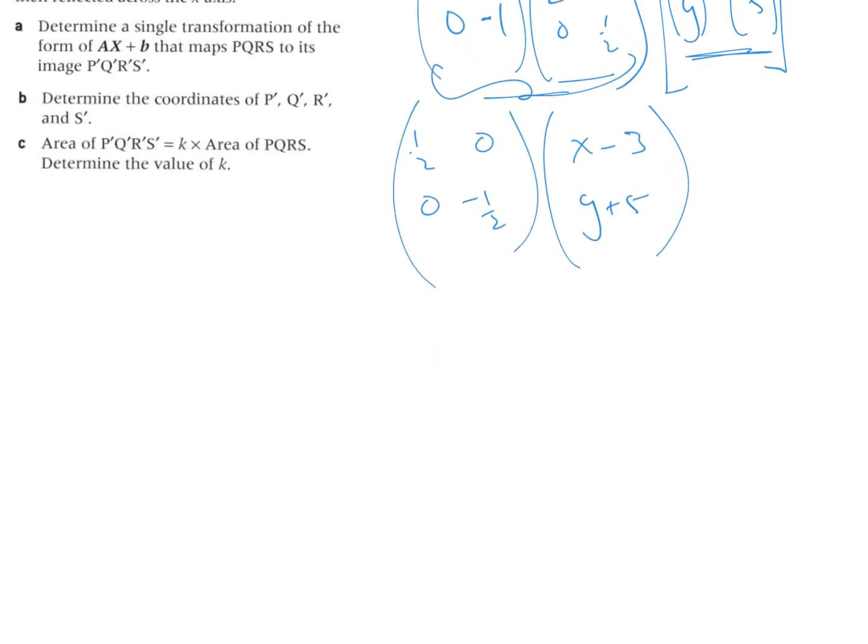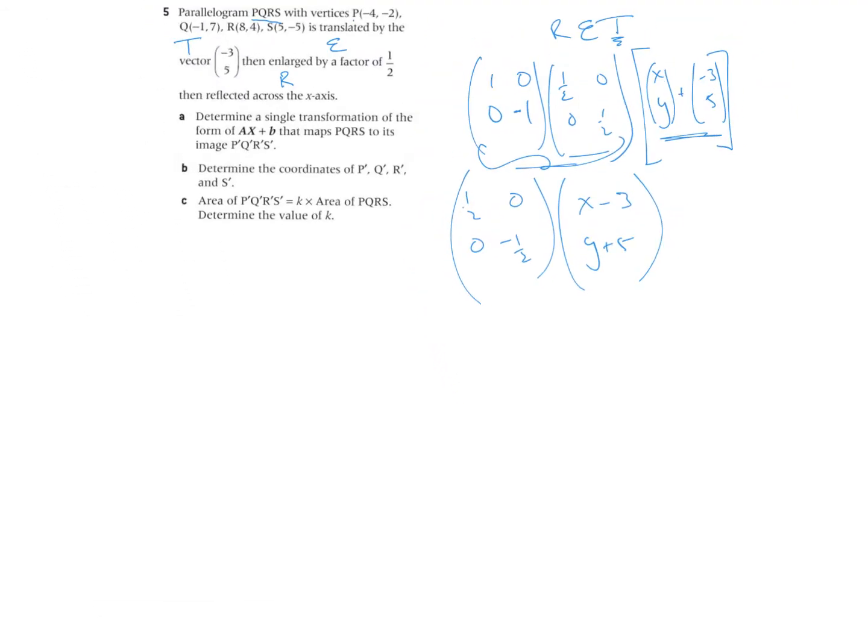So then if I multiply these two together, I know it's a half times this one equals a half times x minus three plus zero times that. And on the bottom will be the zero times x minus three and the negative a half times y plus five, which is half x minus three halves and negative a half y minus five halves.